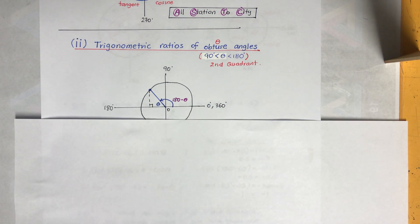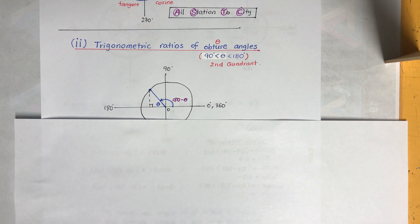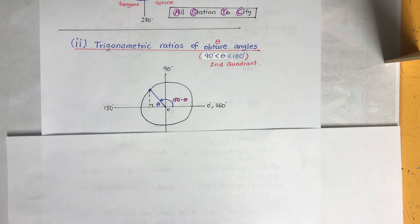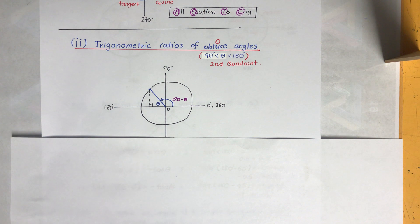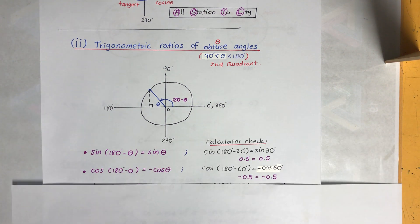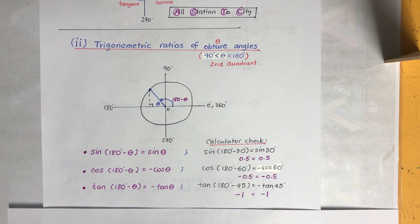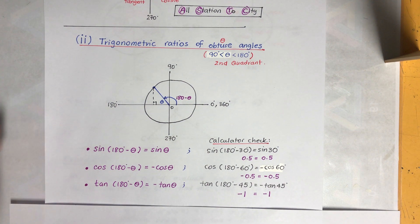Now let's look at part two: trigonometric ratios of obtuse angles. Obtuse angles are between 90 and 180 degrees — 90 is not included because that's a right angle, and 180 is not included because that's a straight angle. You need to memorize the formulas for these.